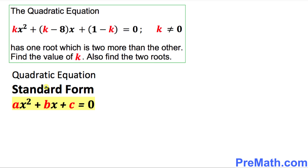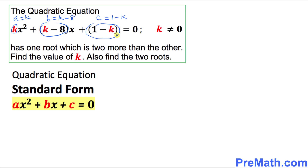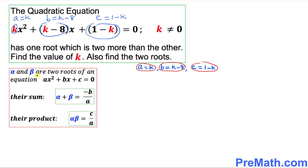Here is the standard form for a quadratic equation. Let's compare this equation with our given quadratic equation. You can see that a is simply K, B is this whole thing which is K minus 8, and C is this whole quantity — C equals 1 minus K.